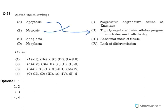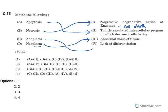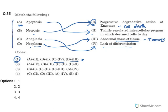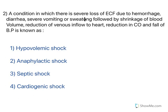Necrosis indicates progressive degradative action of enzymes and also results in cell death. Neoplasm is an abnormal mass of tissue — neo means new, plasm means cell multiplication. Anaplasia means cells lack differentiation. So apoptosis matches with the tightly regulated intracellular death program, necrosis is related to external trauma, anaplasia means lack of differentiation, and neoplasm means abnormal mass of tissue forming tumors. The answer is B.